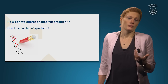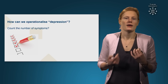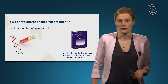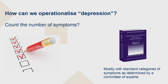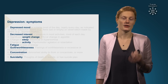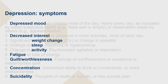Let's look at another way. Maybe we should just count the number of symptoms. Depression has a couple of symptoms — maybe we should count them and see how depressed you are. This is actually roughly the way things are done now. If we need to diagnose someone with a mental disorder, we use the DSM-5, the Diagnostic and Statistical Manual for Mental Disorders. For each disorder, there are standard categories of symptoms determined by experts. For depression, there are nine symptoms: depressed mood, decreased interest, weight change, problems with sleep, problems with activity levels, fatigue, feelings of guilt and worthlessness, problems with concentration, and the most severe — suicidality.